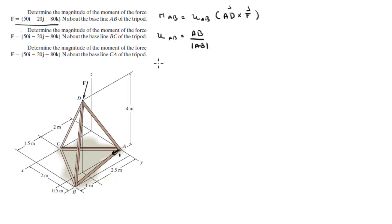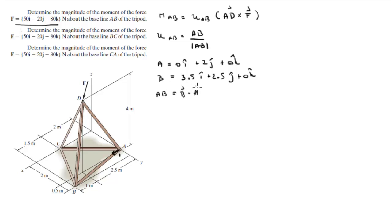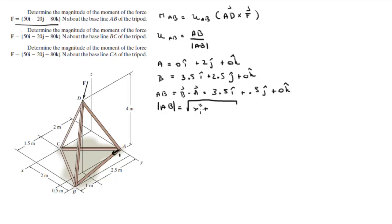Point A sits at 0i + 2j + 0k, and B sits at 3.5i + 2.5j + 0k. Vector AB, which is B minus A, is equal to 3.5i + 0.5j + 0k. The magnitude of AB is found by taking the square root of the x-component squared plus the y-component squared plus the z-component squared, which gives a magnitude equal to 3.54.